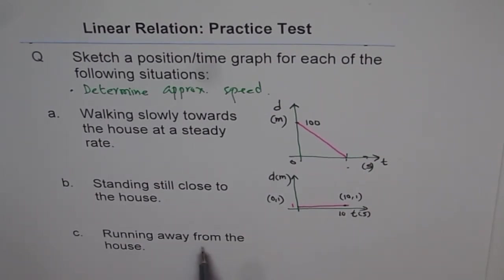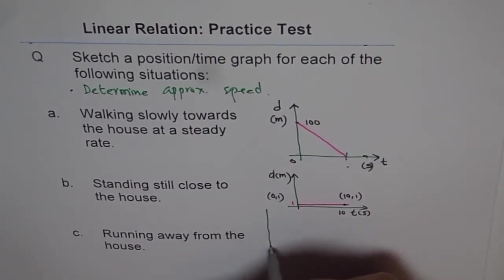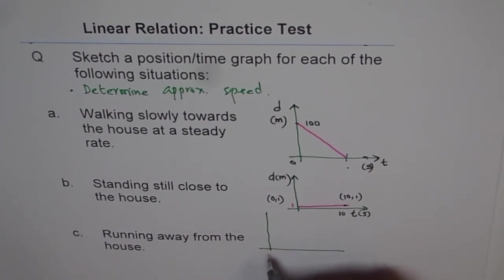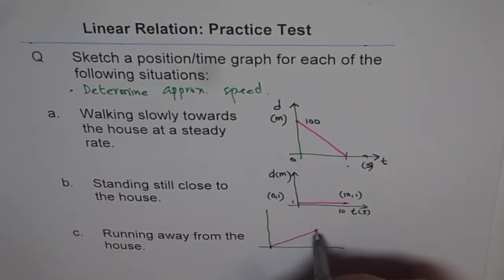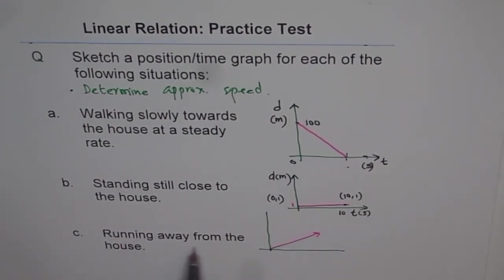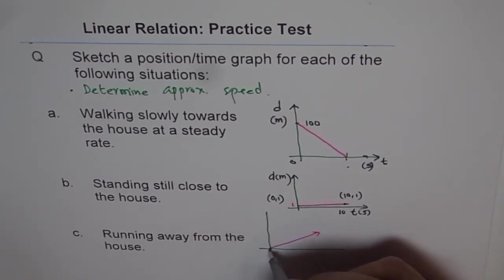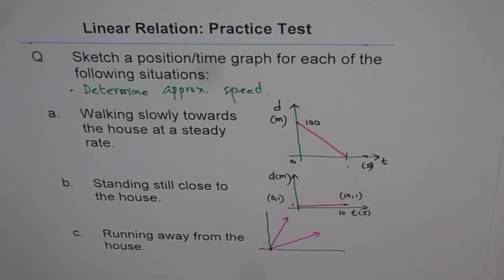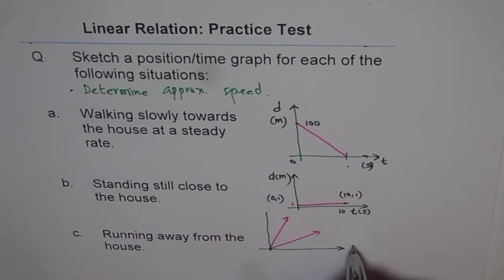Now the third part is running away from the house. Running away from the house means you have to start from the house, so it will be a graph going like this. But when it is running away, we are expecting you to draw a steeper graph. This will be a better graph in this situation. Give some values just as we did here. Try to find the speed.